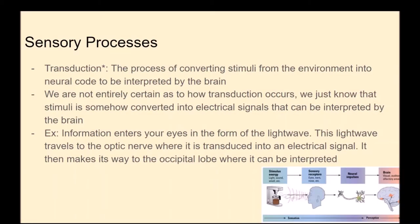When we talk about sensory processes, we want to talk about transduction, which is the process of converting stimuli from the environment into neural code to be interpreted by the brain. We're not entirely certain how transduction occurs; we just know that stimuli are somehow converted into electrical signals that the brain can interpret. For example, information enters your eyes as a light wave, travels to the optic nerve where it is transduced into an electrical signal, and then makes its way to the occipital lobe where it can be interpreted.